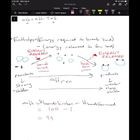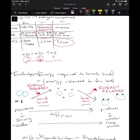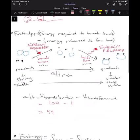Overall, delta H equals positive 99. Going back to the delta G formula, we want delta H to be negative, but here it's positive — that's unfavorable. And going back to our table, we said for a negative delta H we always want to form more stable bonds. In this case we formed less stable bonds, so delta H was positive.